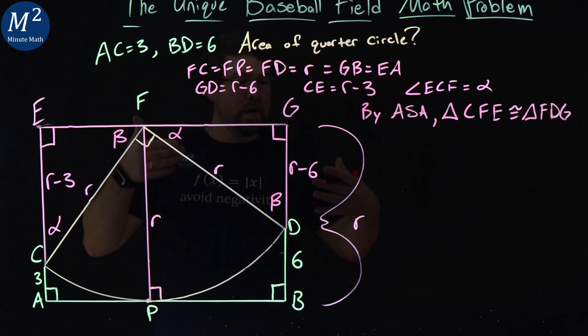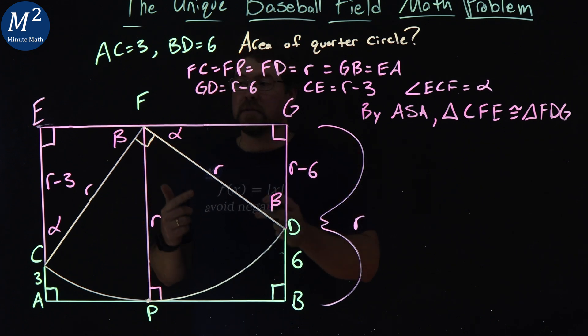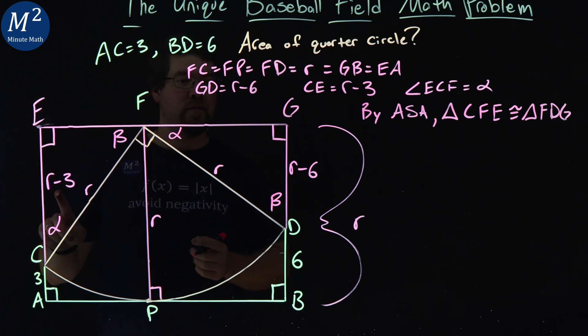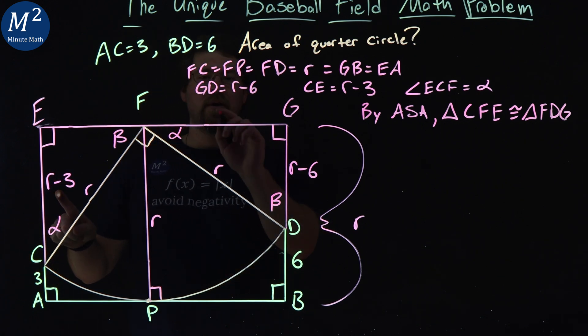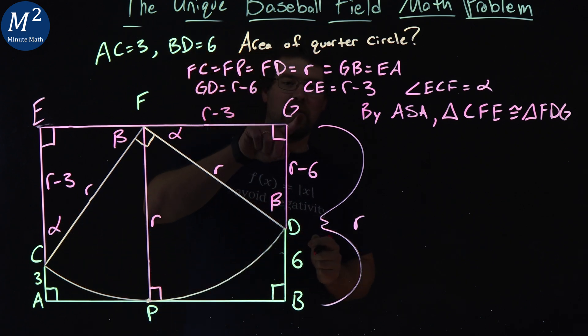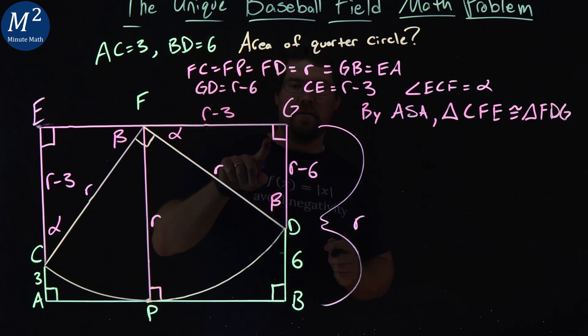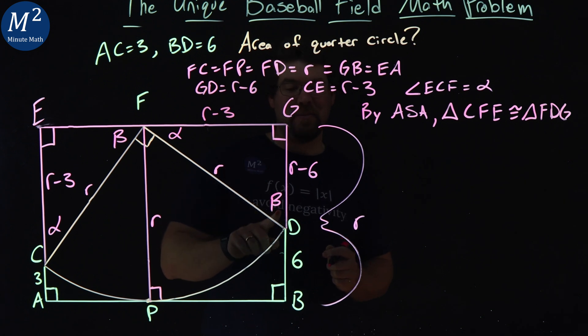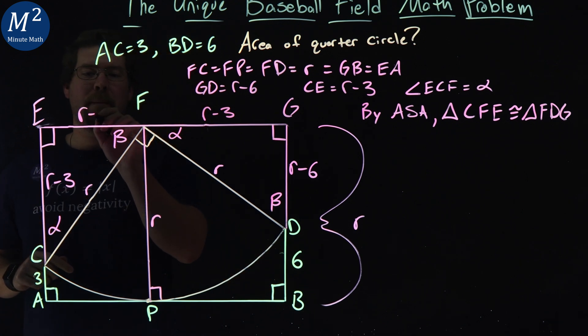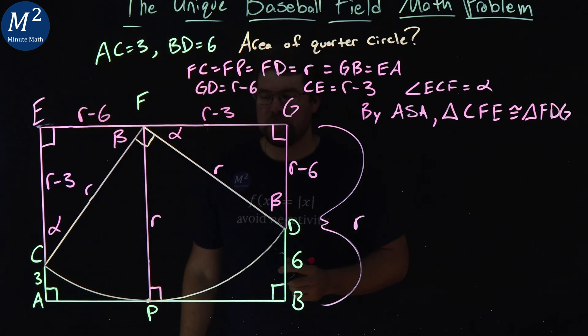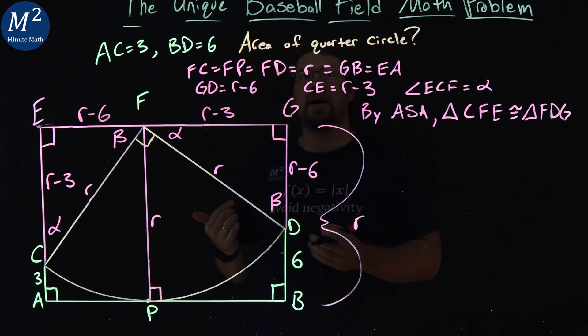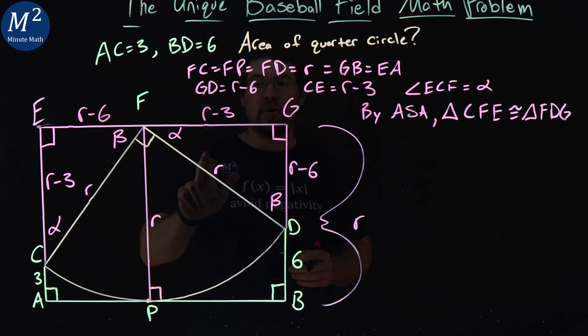And so now that they're congruent, we can now say that their side lengths are the same side lengths. So from alpha to the right angle is an R minus 3, alpha to this right angle would be an R minus 3, so FG is R minus 3. Same thing with G to B, right angle to beta, G to D, R minus 6, EF is an R minus 6. And so with this, we can apply Pythagorean theorem on one of these triangles to try to get the value of R.